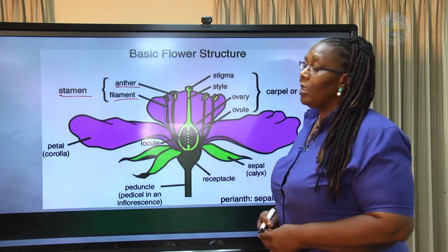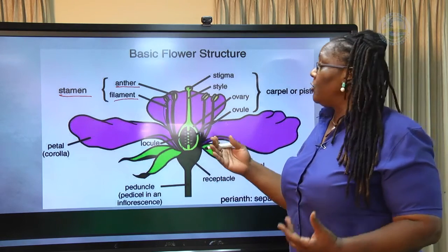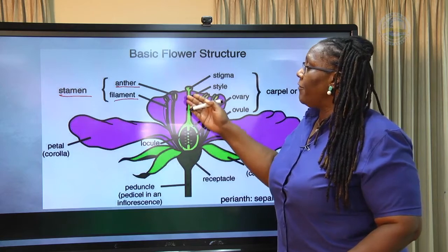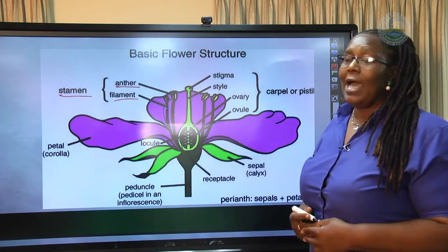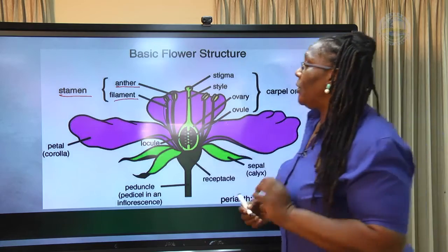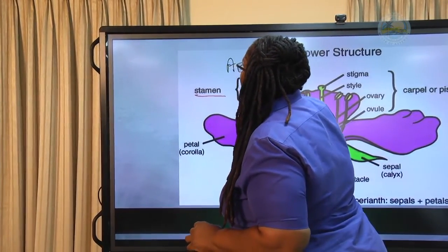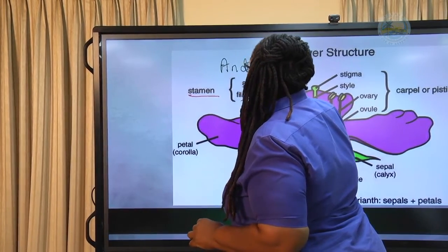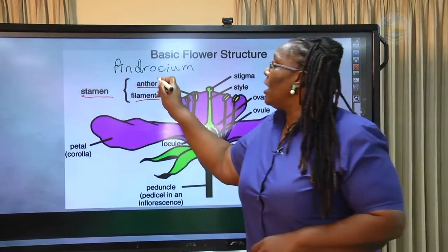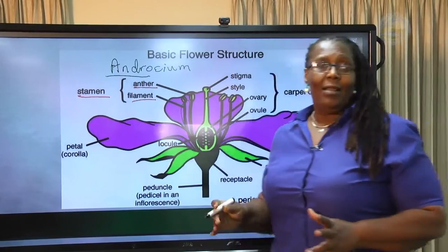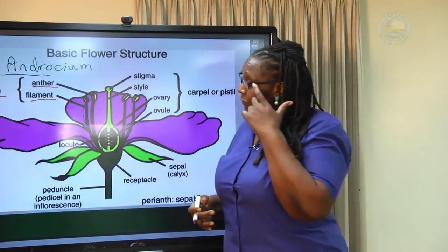The collection of stamen is known as the androecium — A-N-D-R-O-C-I-U-M. You hear the word 'andro'? That means male. So the androecium is the collection of the male parts of a flower.